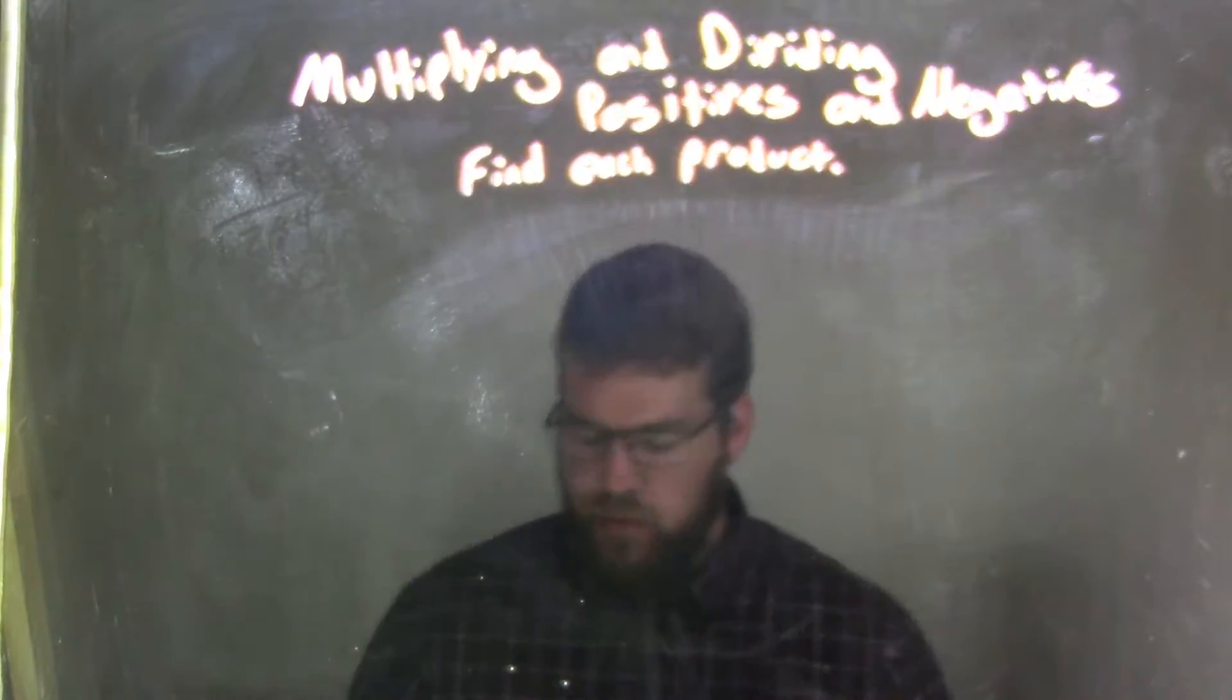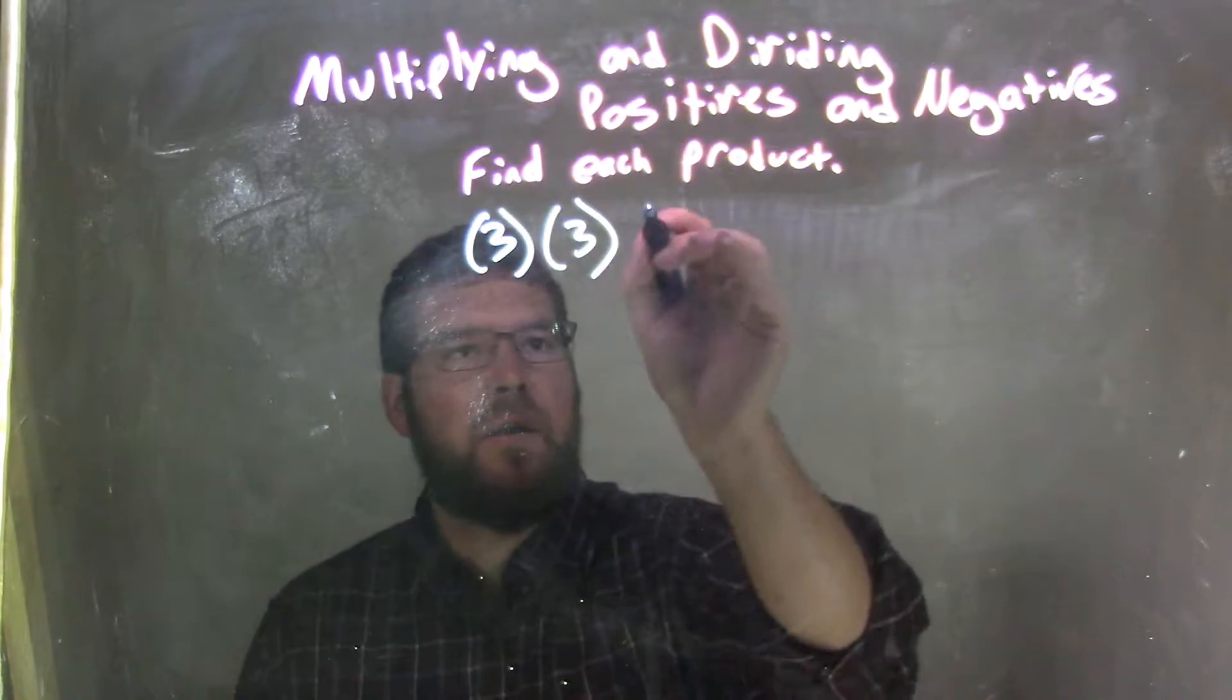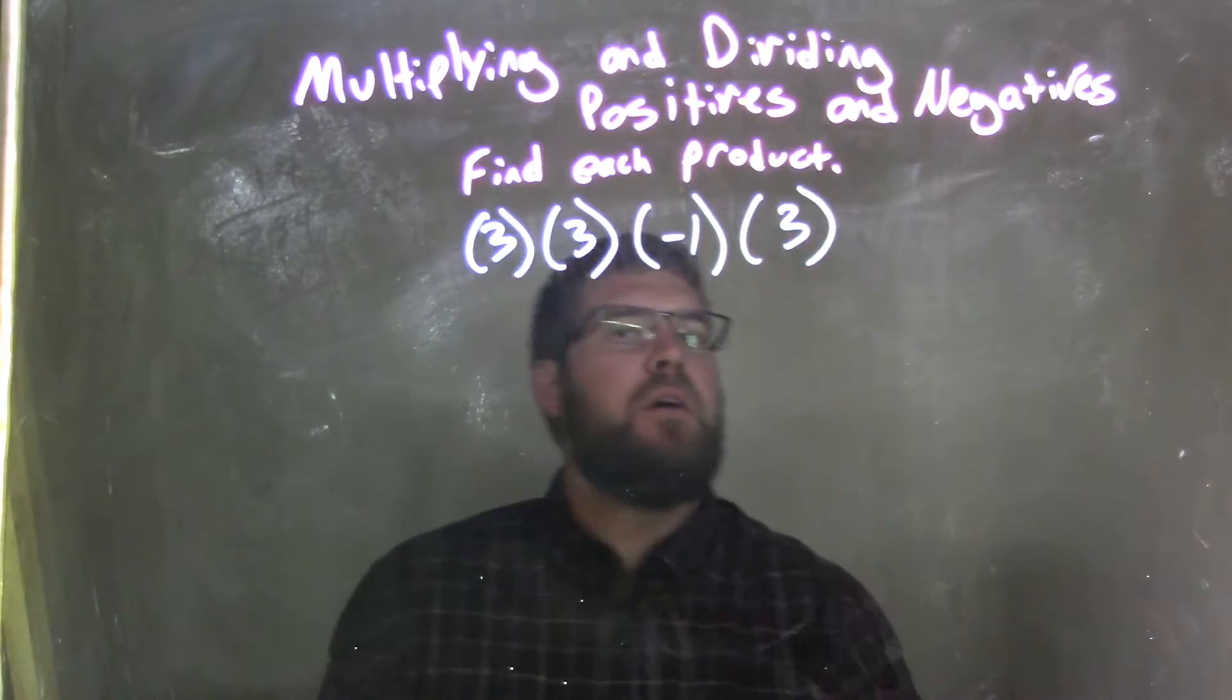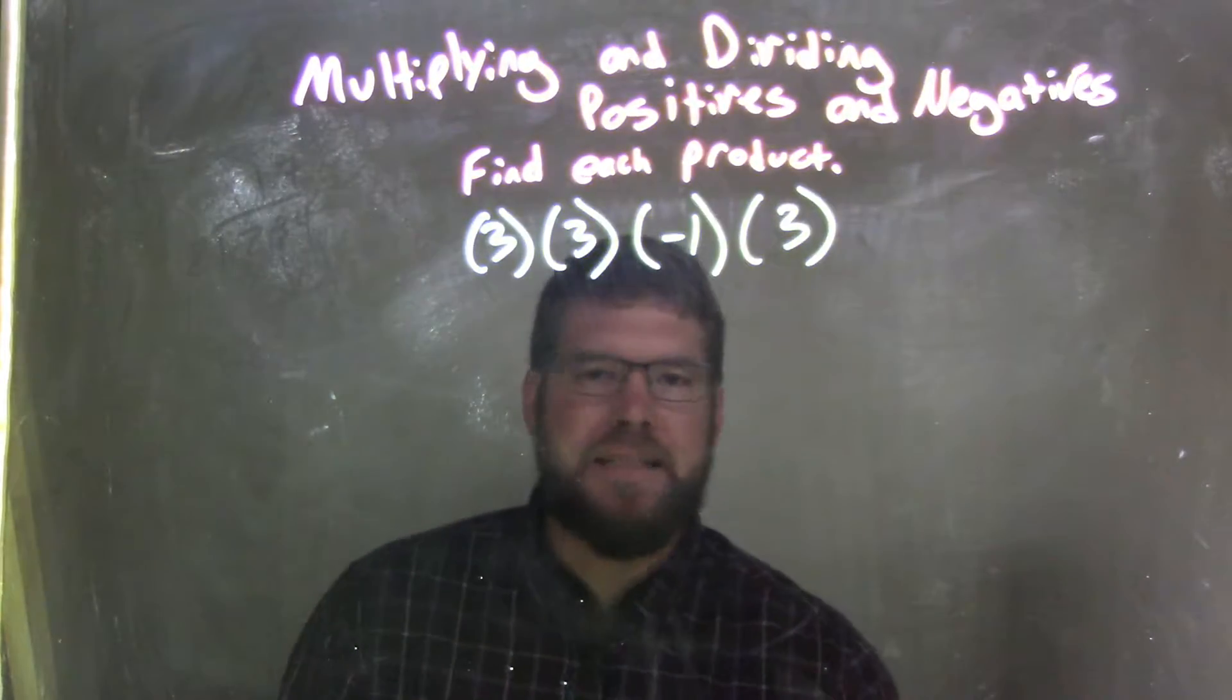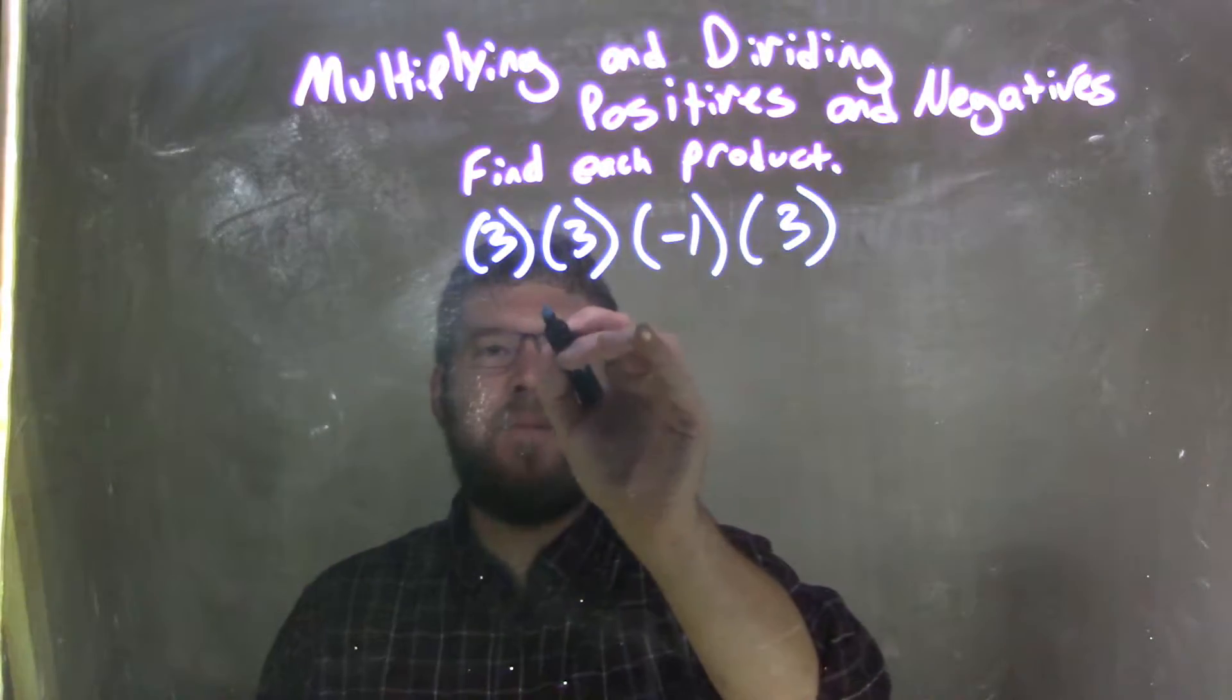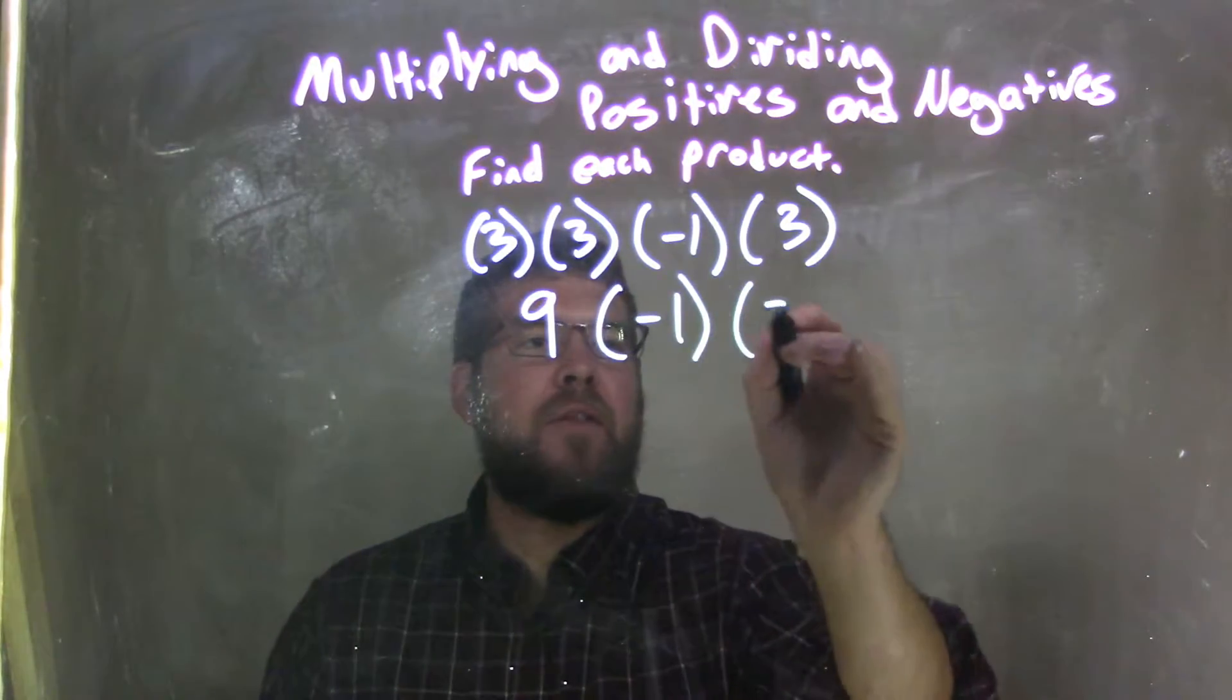If I was given this product: 3 times 3 times negative 1 times 3. We have multiplication across the board, so let's start reading left to right. 3 times 3 is 9. I'm going to bring down the negative 1 and bring down this 3.